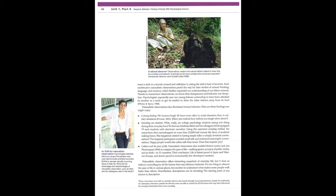Culture and the pace of life. Naturalistic observation also enabled Robert Levine and Ara Norenzayan to compare the pace of life—walking speed, accuracy of public clocks, and so forth—in 31 countries. Their conclusion? Life is fastest paced in Japan and Western Europe and slower paced in economically less developed countries. Naturalistic observation offers interesting snapshots of everyday life, but it does so without controlling for all of the factors that may influence behavior. It's one thing to observe the pace of life in various places, but another to understand what makes some people walk faster than others. Nevertheless, descriptions can be revealing. The starting point of any science is description.